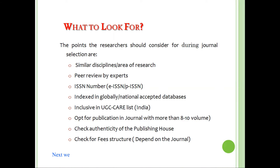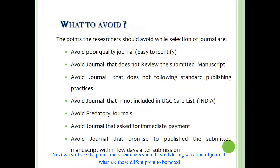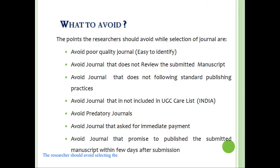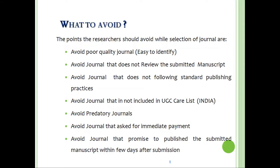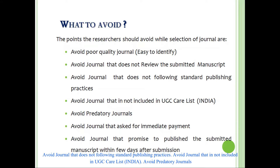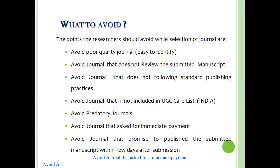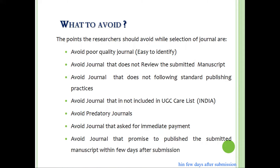Next, we will see the points that the researcher should avoid while selecting journals. Avoid selecting a journal if its quality is poor. Avoid journals that do not review the submitted manuscript. Avoid journals that do not follow standard publishing practices. Avoid journals not included in the UGC care list if you are from India. Avoid predatory journals. Avoid journals that ask for immediate payment after submission. Avoid journals that promise to publish the manuscript within a few days after submission.